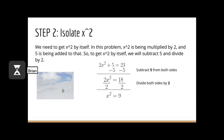Step 2 is to isolate x squared — we need to get x squared by itself. In this problem, x squared is being multiplied by 2 and 5 is being added to that. So to get x squared by itself, we will subtract 5 from both sides and then divide both sides by 2. Once we do this, we will be left with x squared equals 9.